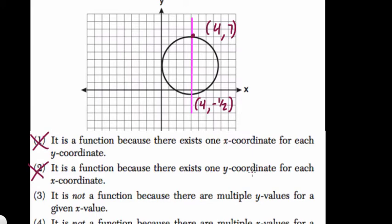The third one, it is not a function because there are multiple y-values for each given x-value. Well, that's what I would circle here because that's exactly what's happening. We have multiple y-values for a single x-value. In other words, multiple range values for a single domain value, and that's not what a function is.